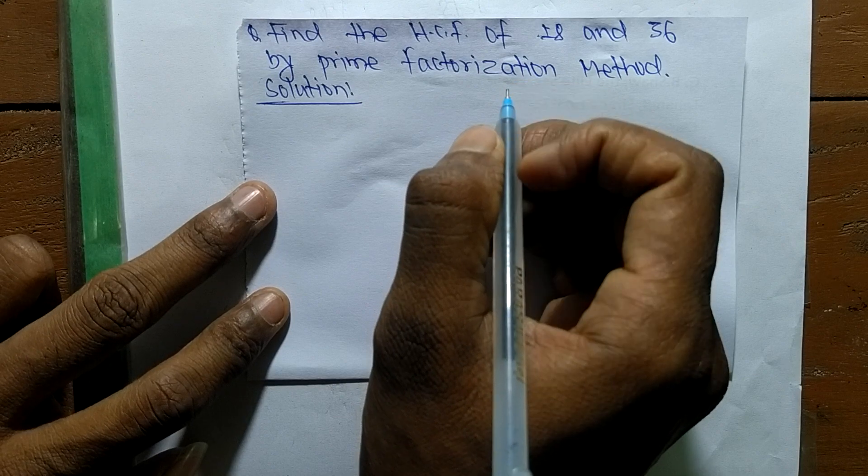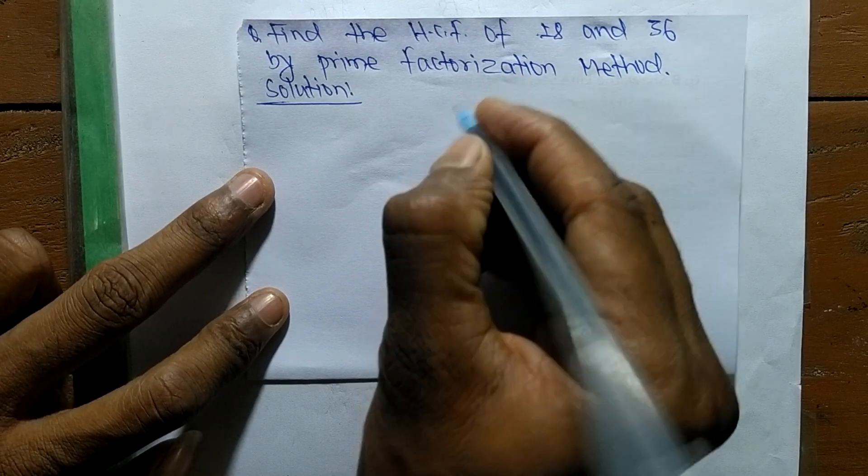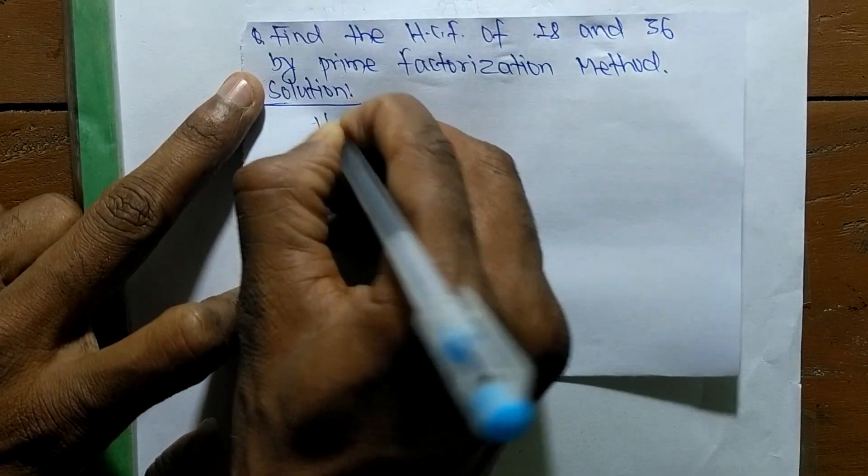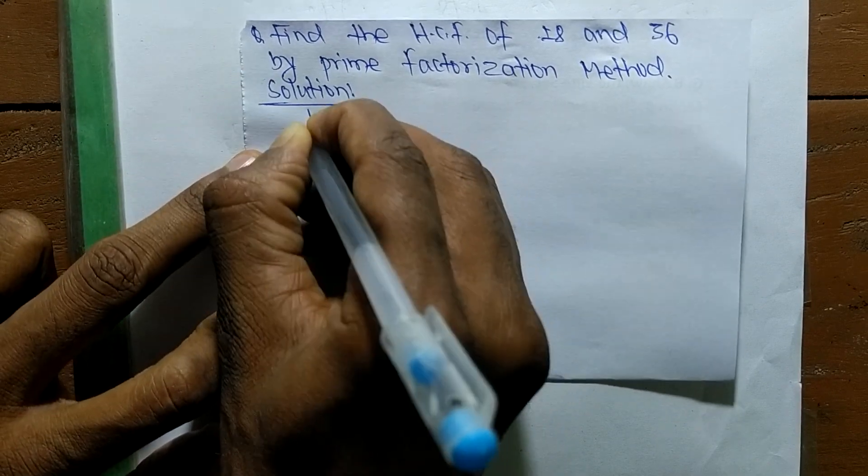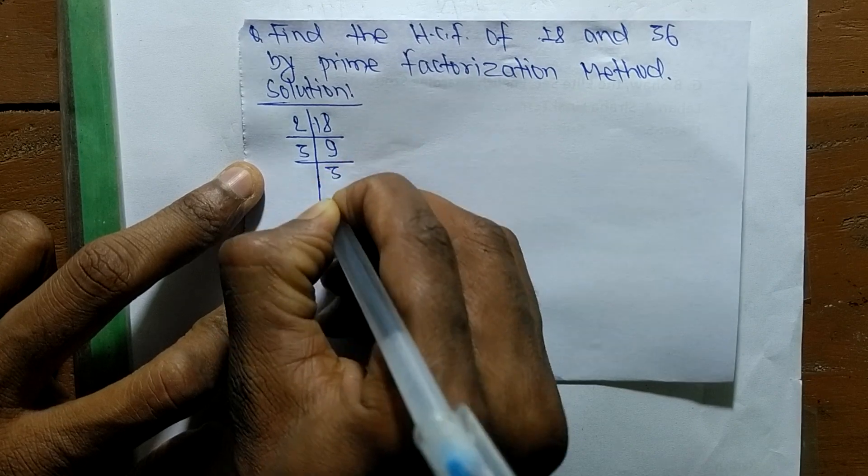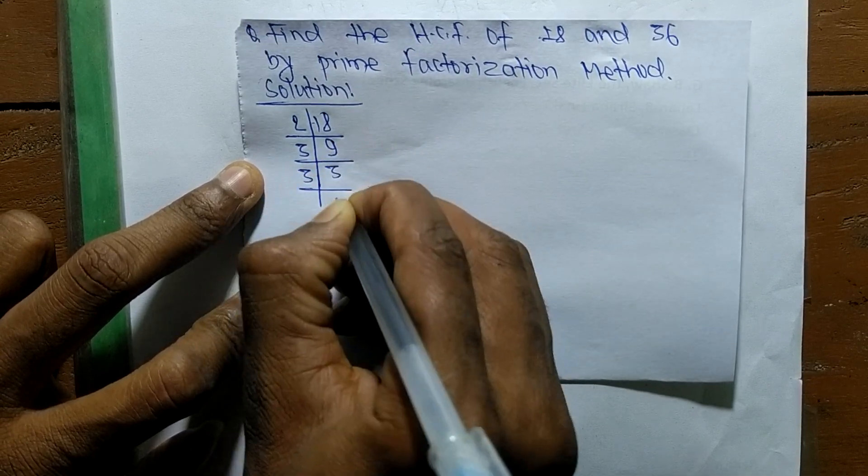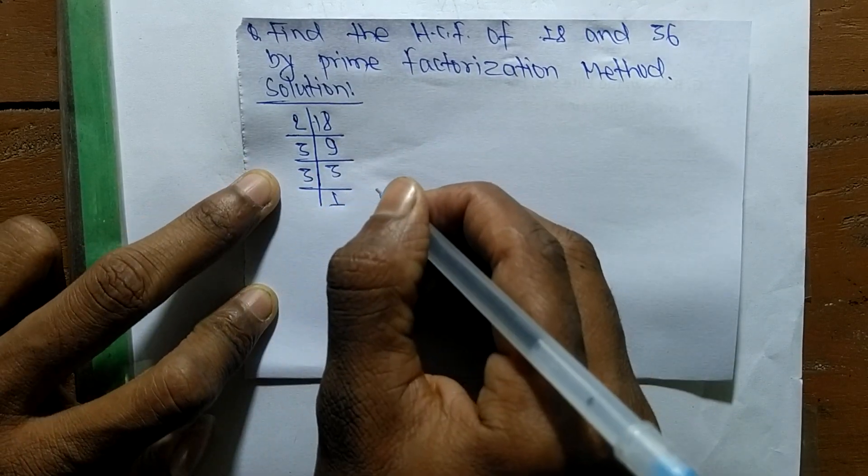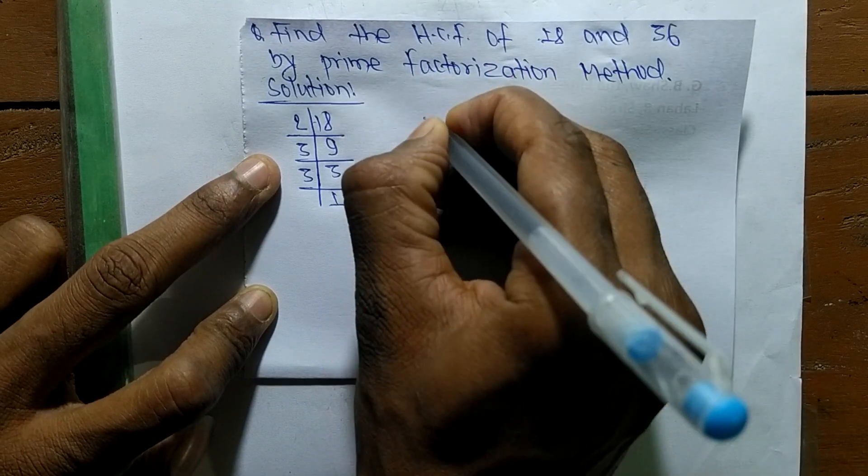In this method, first we find out the prime factors of 18. So it is 2 times 9 means 18, 3 times 3 means 9, and 3 times 1 means 3.